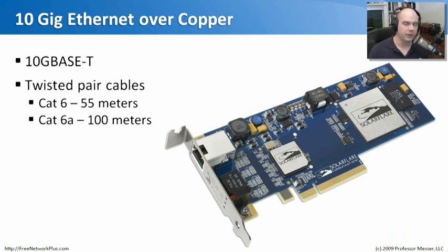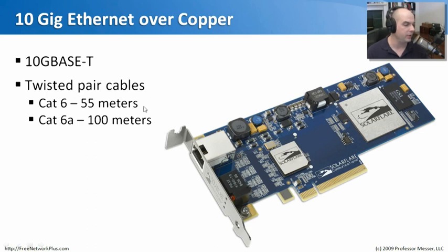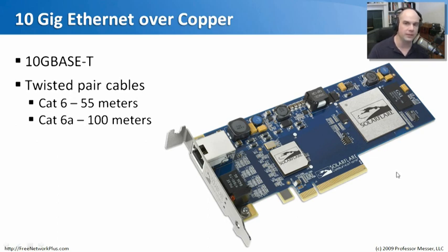For server communications in a data center where you don't want to use the more expensive fiber, you can plug in 10 gig over copper using the standard 10GBase-T, which uses twisted pair cables. Over CAT6 cable it can go 55 meters, and CAT6A will go 100 meters. This is an example of a card you could put into a server or desktop machine to run those high-speed 10 gig connections directly into those devices.